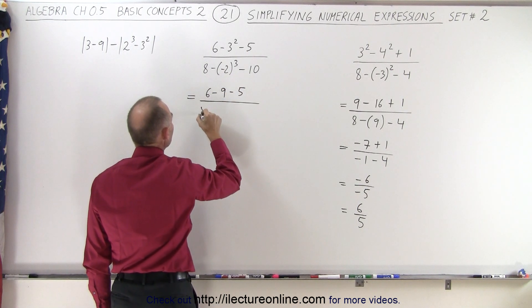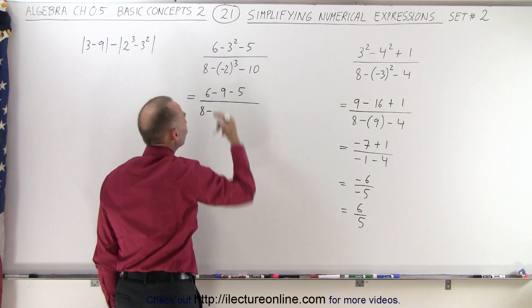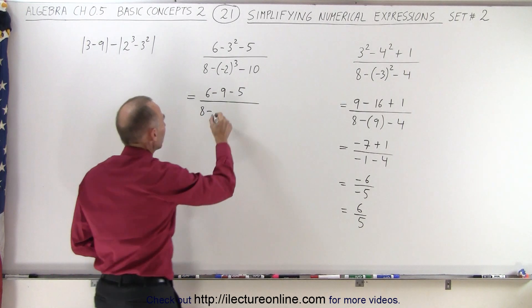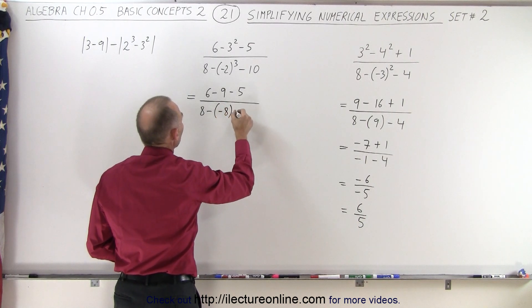In the denominator, we have 8 minus a minus 2 cubed. So minus 2 times a minus 2 times a minus 2, that's a negative 8. So negative 8 minus 10.